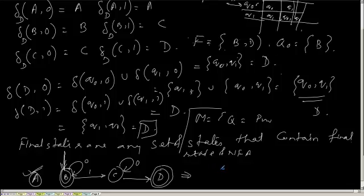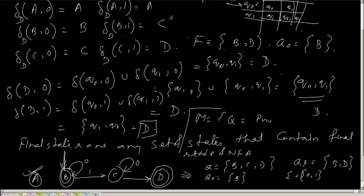My Q is B, C, D. The starting state Q0 is B. QF is B and D. Alphabet is 0 comma 1 and the transition functions. I can discard the transition functions for A also.